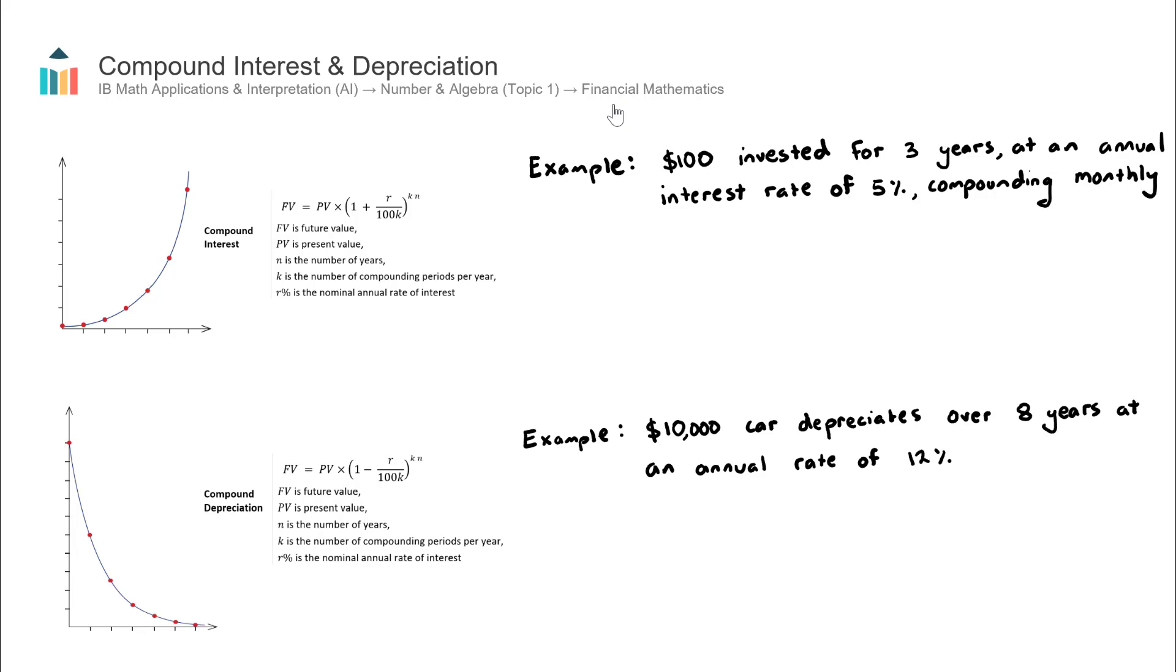It's important because it's pretty much guaranteed that this concept, either compound depreciation or compound interest, will appear in either Paper 1 or Paper 2. It's worth 6 marks for Paper 1 or between 12 and 18 marks for Paper 2.